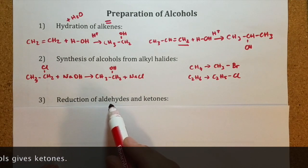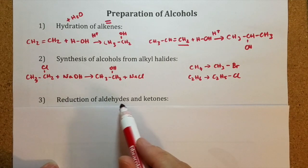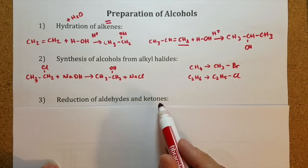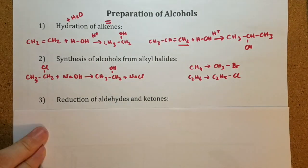So, if you have an aldehyde, it can be reduced to a primary alcohol. And if you have a ketone, it can be reduced to a secondary alcohol. This could be done with hydrogen. These are going to be additional reactions. Let's see them.